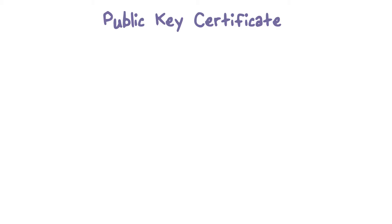Anyone can forge such a public announcement. Some user could pretend to be Bob and send a public key to another user, such as Alice, and tell Alice that this is Bob's public key. The result is that when Alice sends a private message to Bob — say she encrypts it using Bob's public key — that public key is actually forged by the attacker. Then the message can be intercepted and read by the attacker.